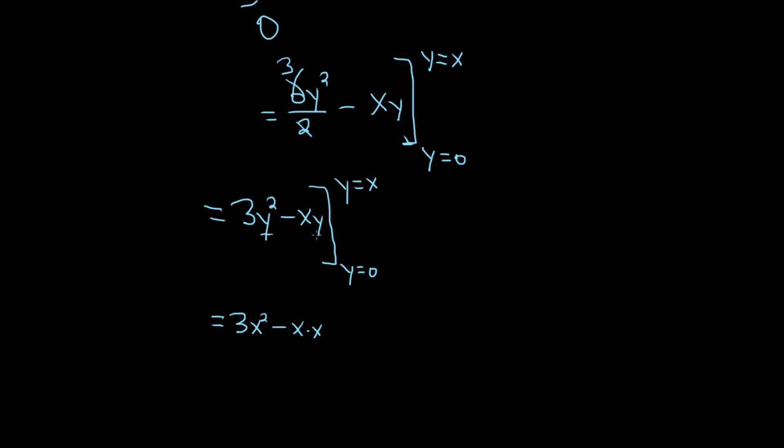Just replacing each of the y's with x using this condition here. And then minus parentheses, and now we're going to replace all the y's with 0s. So 3, 0 squared minus x times 0. Well, all that's going to be 0. So this will be 3x squared.